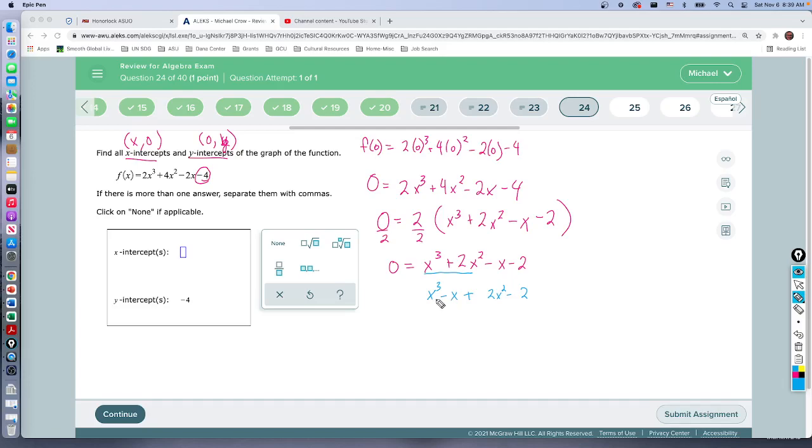Okay so I'm gonna group those guys because there's a common two, this has a common x. Let's see what happens when we do that. So for the first pair we're gonna group, we're gonna factor out the x so what's left behind? An x squared minus one. So that's that part. Plus, for this one what's common? The twos are common so let's factor out a two and what's left? x squared.